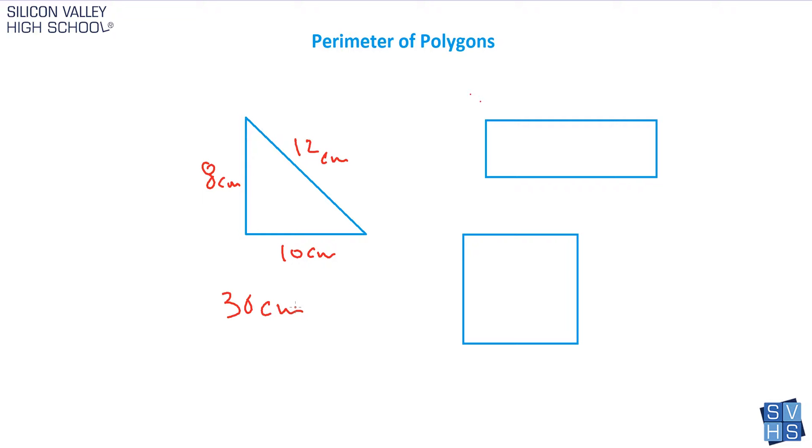Perimeter is shockingly easy if you're given the lengths of all the sides. The only way they can make it mildly difficult is if they neglect to give you the sides and you have to be smart in finding them.